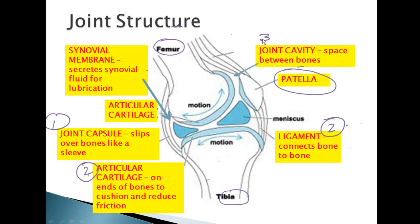There is still going to be some space between everything, which we call the joint cavity. Within that joint cavity there is a membrane that secretes synovial fluid — another safety feature to make sure there is enough lubrication to allow for movement. In some joints there may be extra cartilage and extra cushion; in the case of the knee, there is the meniscus, which is more cartilage. That is the basic joint structure, starting on the outside with the joint capsule and working inward to the synovial membrane and synovial fluid.